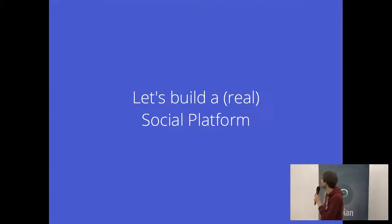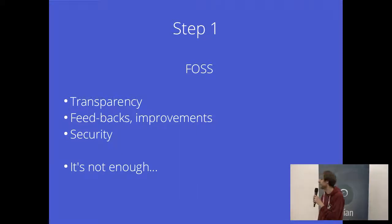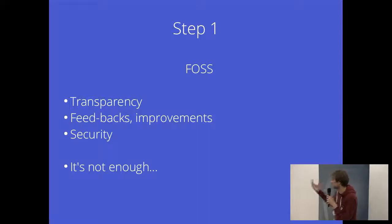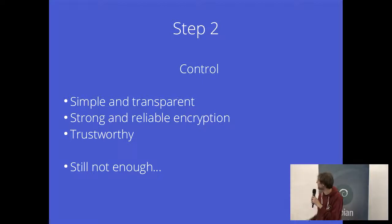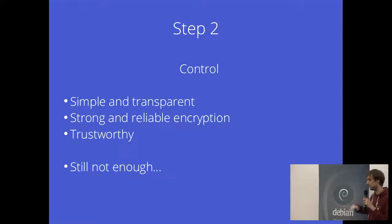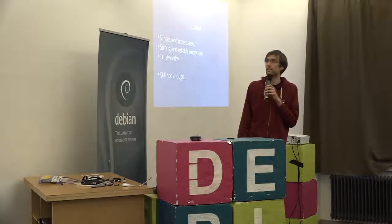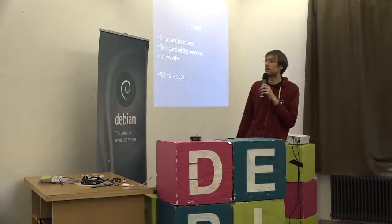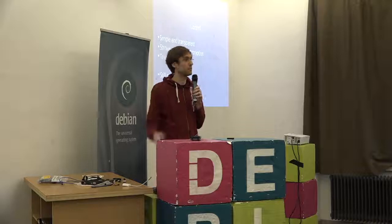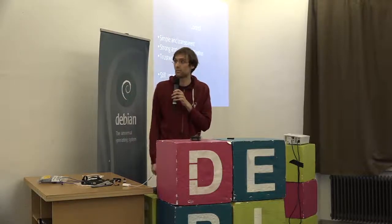The idea of MoVim is to build a social platform. It needs to be open source for transparency, for feedback, improvements, and security. I think you know about the advantages of free software, especially on the communication and social network part. But it's not enough — we also need to bring control. It needs to be simple and transparent on the UI but also on the protocol level. It needs to have strong and reliable encryption — don't reinvent encryption, I'm talking about Telegram here. You need to have some trust, so having a community and not only a company that you blindly trust to take care of all your communication.